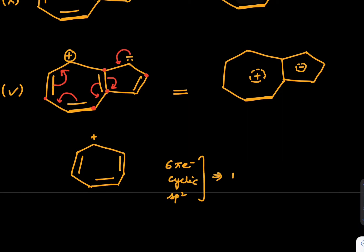Likewise, when we have a cyclopentadienyl and a C negative is given, this again six pi electrons moving inside cyclic structure, sp2 hybridized, and hence we can say this is aromatic.